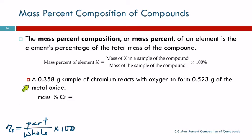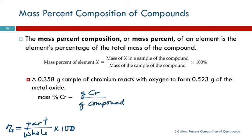So if we look at this example: a 0.358 gram sample of chromium reacts with oxygen to form 0.523 grams of the metal oxide. What's the mass percent of chromium? Mass percent just means we're finding the percent of chromium by mass. So the mass percent of chromium equals the grams of chromium divided by the grams of the whole compound. We don't know what the compound formula is, but that's okay — we have the whole mass and we multiply by 100 percent.